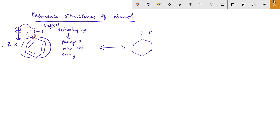If you look at this carbon, there is a 5-bond situation. If you look at this bond, this electron will shift. If you look at this carbon, there is a negative charge. Negative charge is here. Double bond is here.